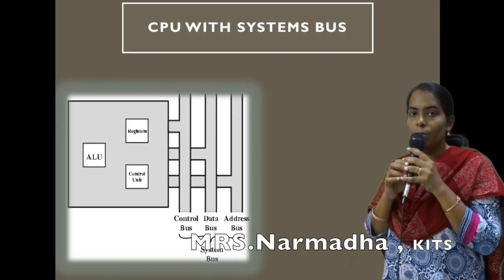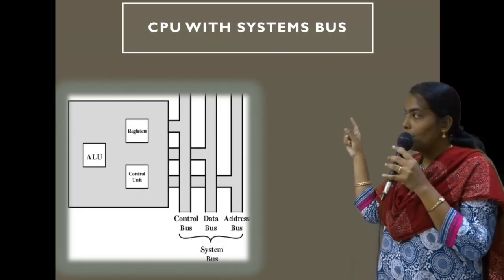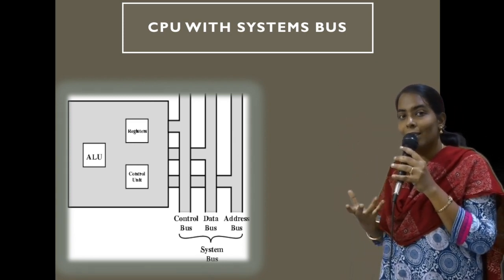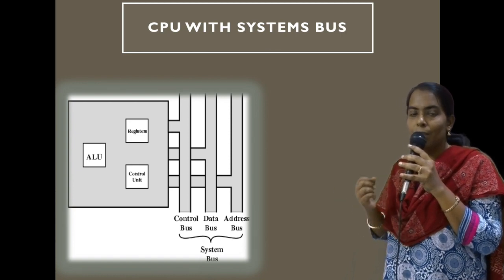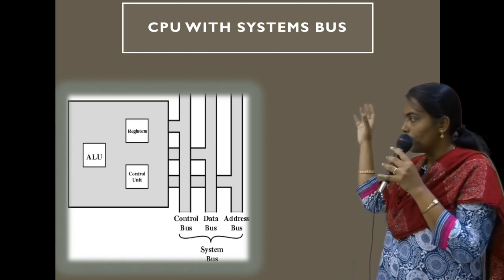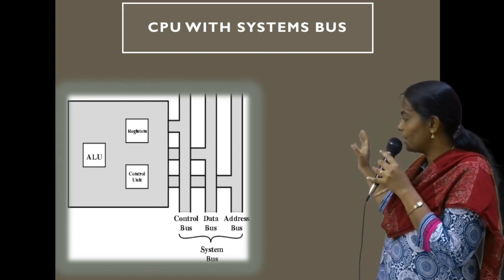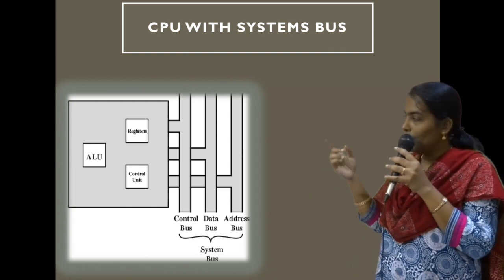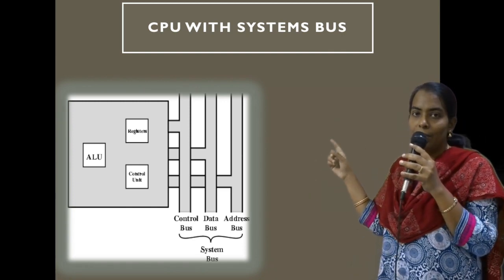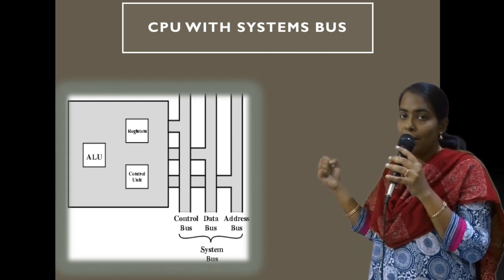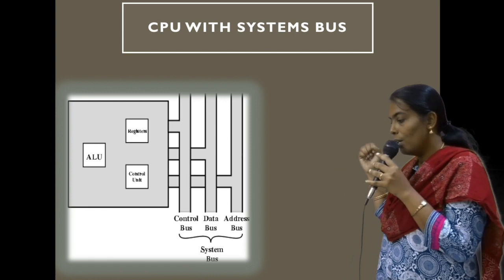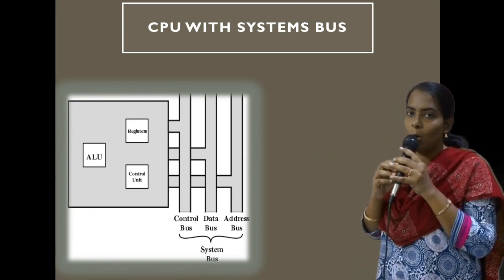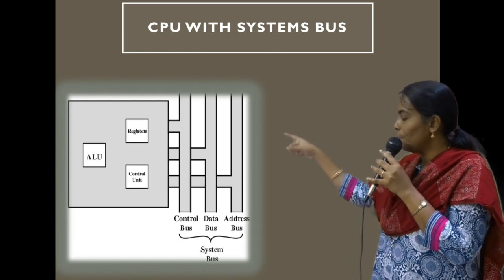Next we will see the diagrammatic representation of the CPU along with the system bus. The system bus is the combination of the address bus, data bus, and control bus. The address bus carries the address; the data bus carries data into and out of the processor; and the control bus is mainly used for coordinating all these functionalities.